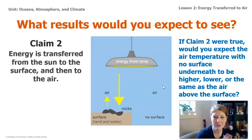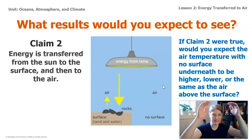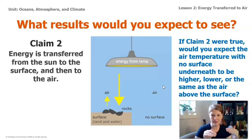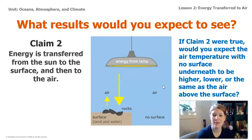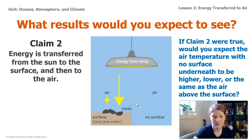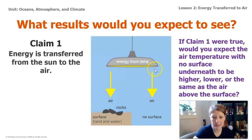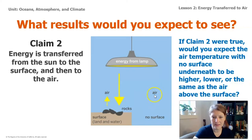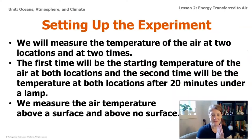For claim two, if that were true, what would you expect? Claim two says energy is transferred from the sun to the surface of the earth, passes right through the atmosphere without affecting it at all, and then from the surface to the air. If claim two were true, would you expect the air temperature with no surface underneath to be higher, lower, or the same as the air above the surface? If claim two is true, then no energy would be transferred to the air with no surface at all. So let's talk about setting up this experiment.